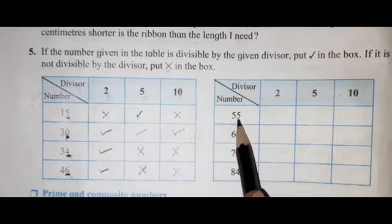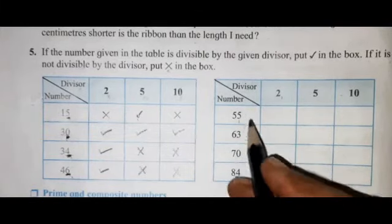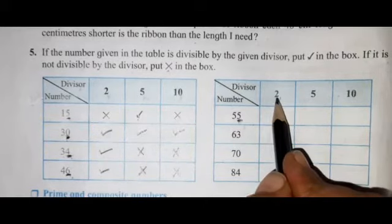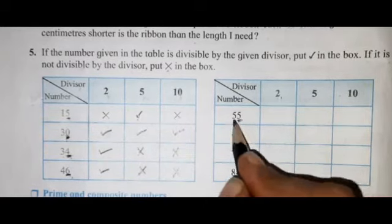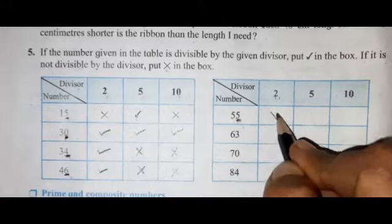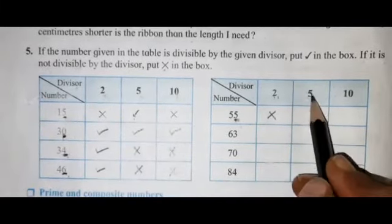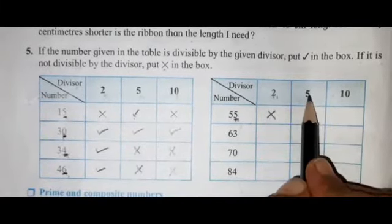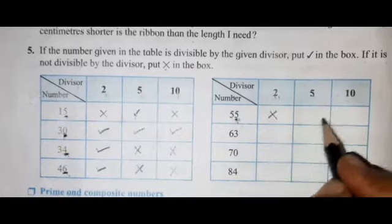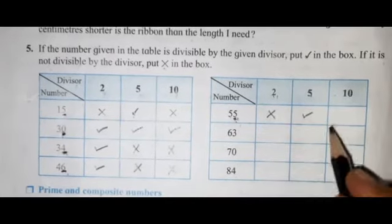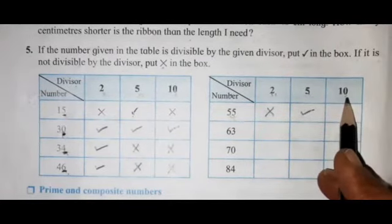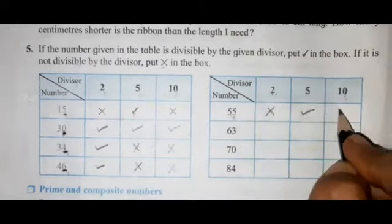Number is 55 and divisor is 2. The unit place digit is 5, which is not 0, 2, 4, 6, or 8, so 55 is not divisible by 2 — put cross. Is 55 divisible by 5? Yes, because the unit place is 5 — so 55 is divisible by 5; put tick. Is 55 divisible by 10? No — put cross.